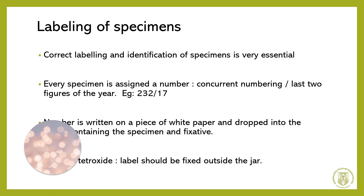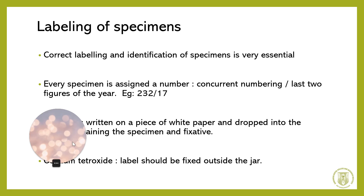Labeling of specimens: after the gross specimen has been inked, specimens should be labeled. Correct labeling and identification of specimens is very essential. Every specimen is assigned a concurrent number and the last two figures of the year — for example, if the biopsy number is 1 and the year is 2017, it should be 1/17; if the biopsy number is 232 and the year is 2017, it should be 232/17. The number is written on a piece of white paper and dropped into the bottle containing the specimen and fixative.